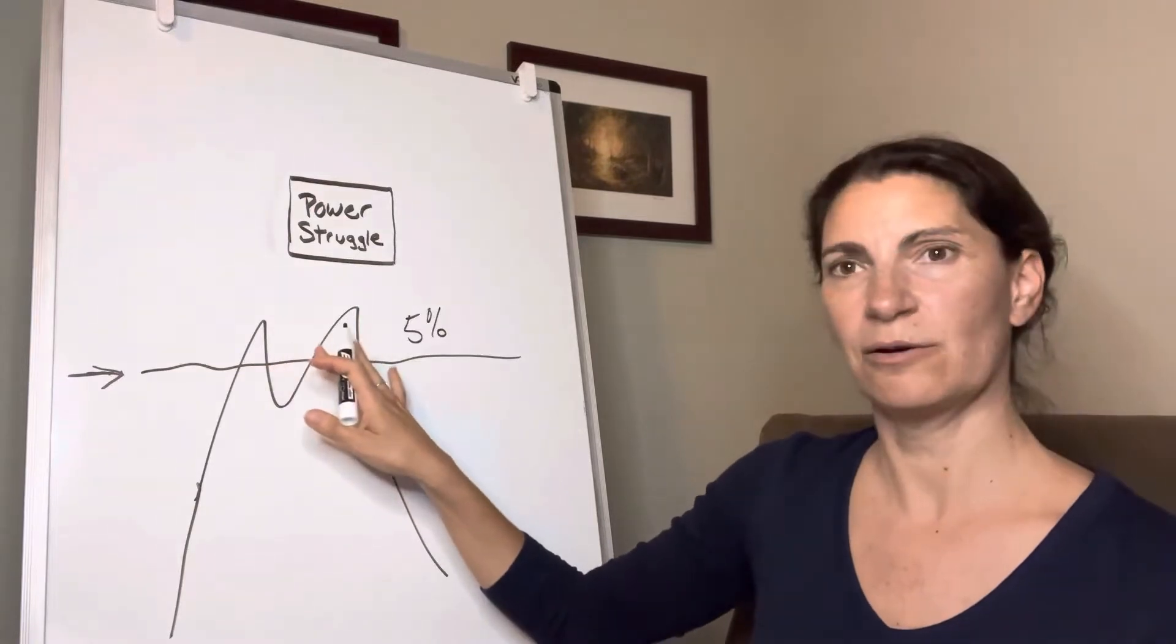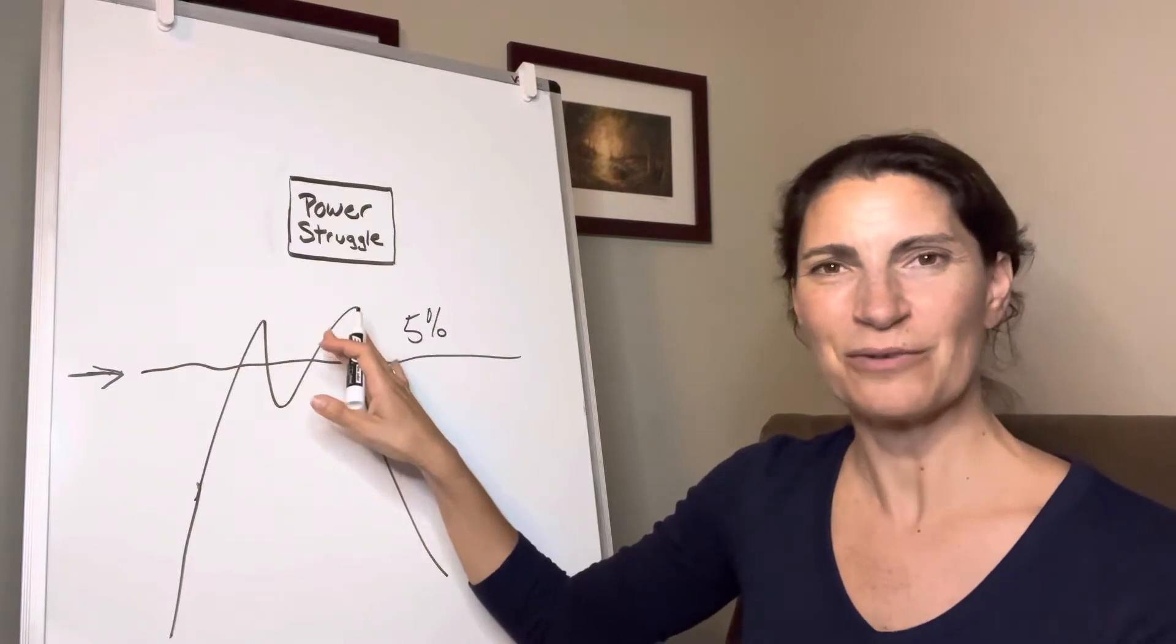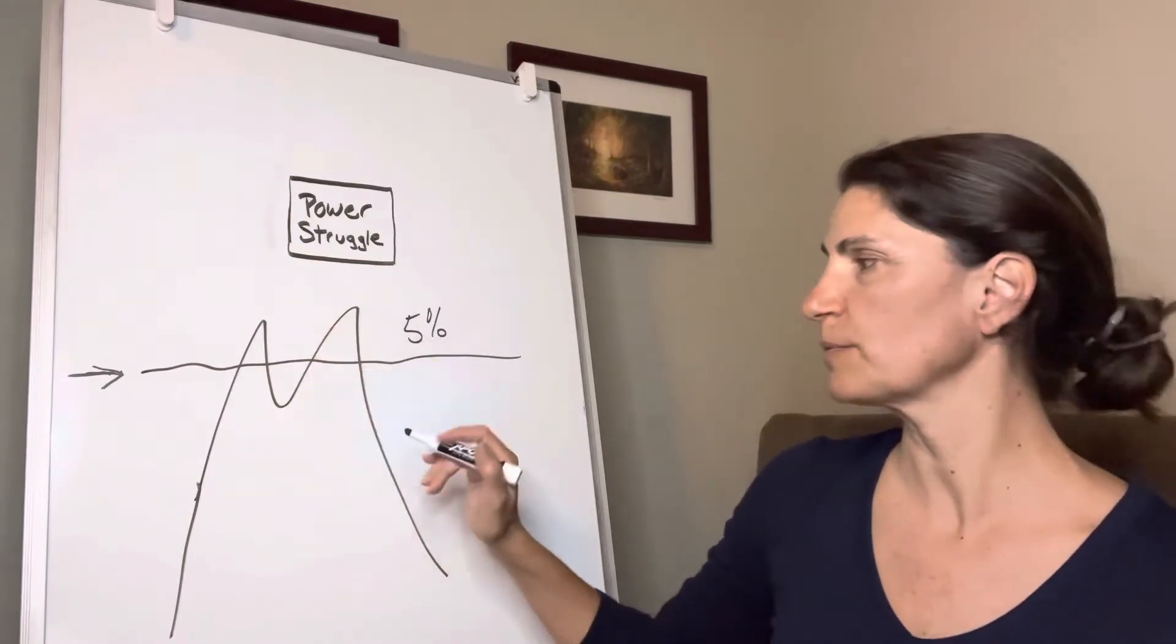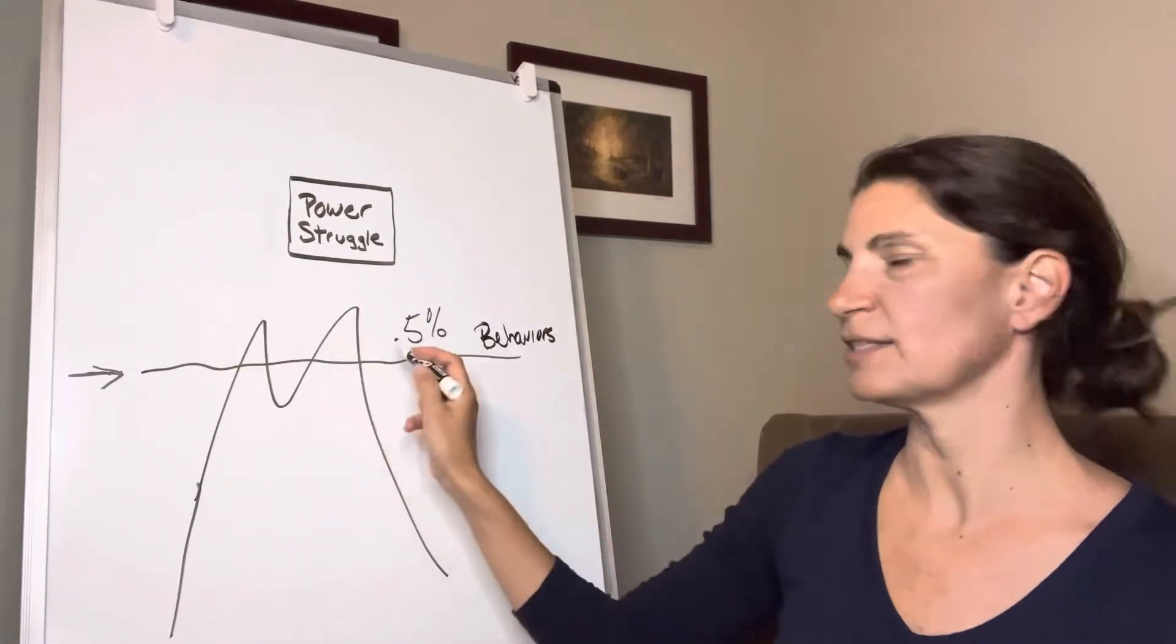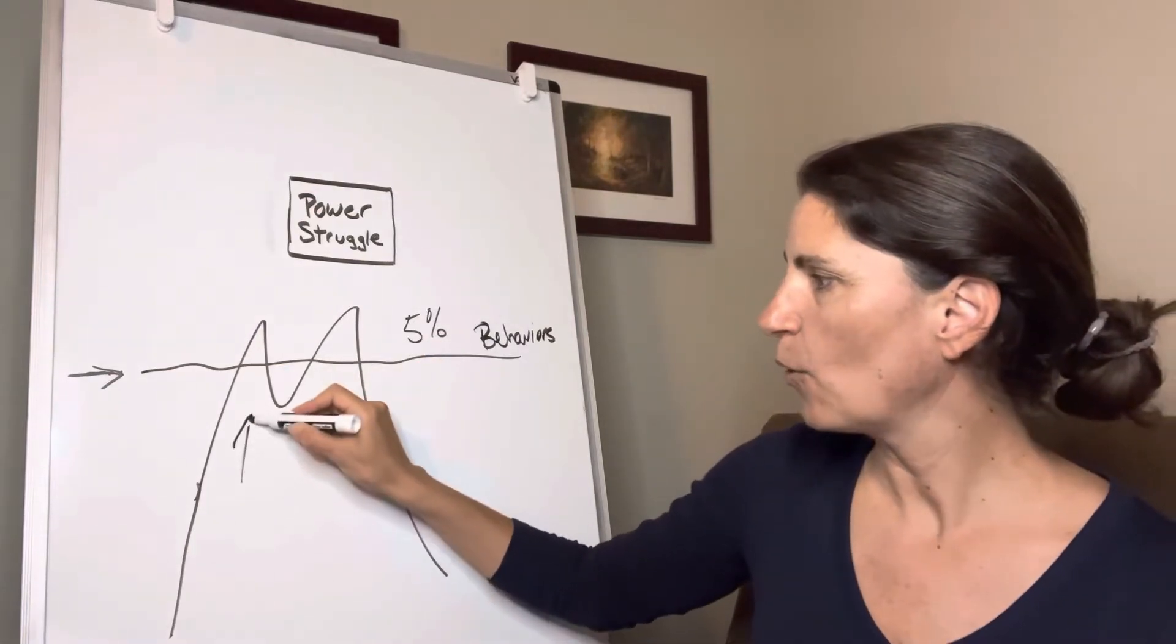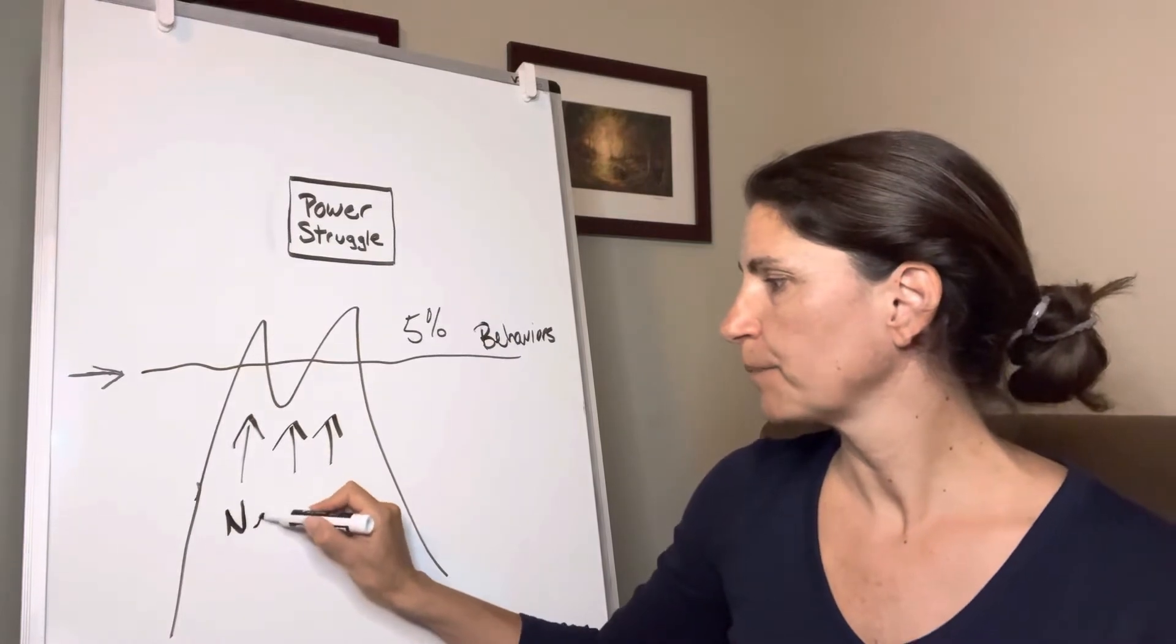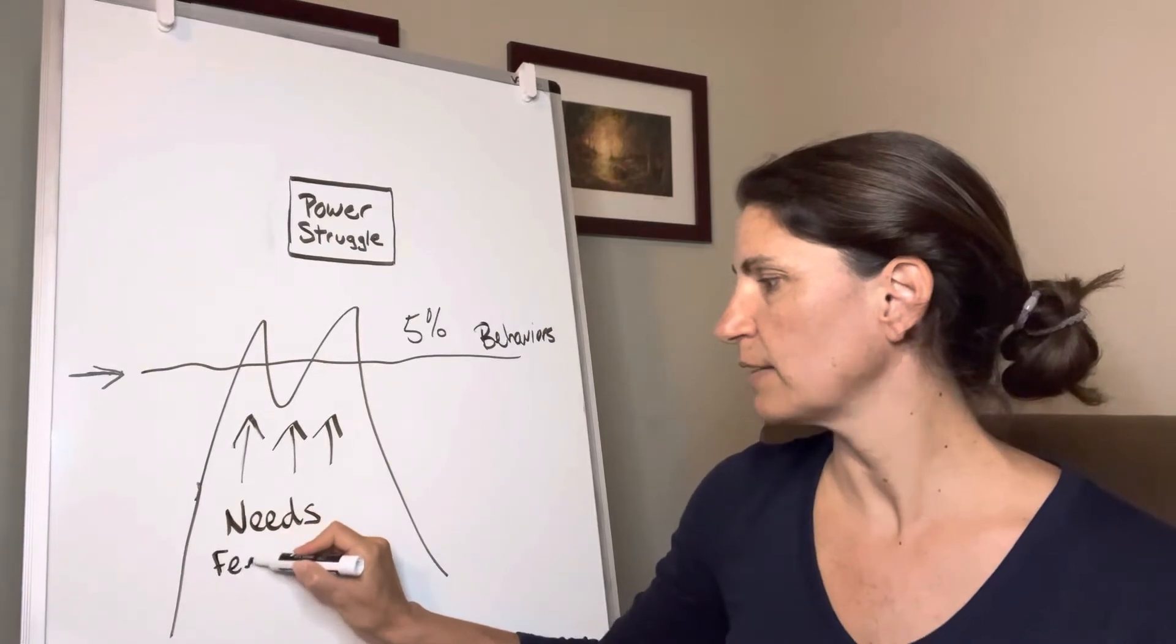So the 5% here represents our children's behaviors that we see that typically are very frustrating for us. But it's helpful to use nonjudgmental terms to refer to them. So we can call those behaviors off-track behaviors. What's helpful, because this usually gets about 95 or 100% of our attention, is to think about what's driving that off-track behavior. You might not always know, but often it has to do with unmet needs,